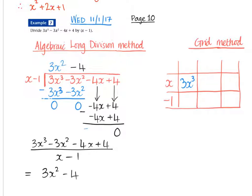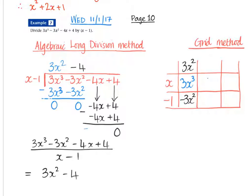Looking at the grid method like we did before - this is where it breaks down a little bit because you've got 0s. So we say to ourselves, the first part that we've got is our x here and the 3x cubed. So what do I multiply x by to get 3x squared, or divide 3x cubed by x? That would give us 3x squared. Then multiplying by minus 1 gives me minus 3x squared. Now what I actually want is minus 3x squared, so I don't have to add anything onto it. So that part there is going to be a 0. So 0 times minus 1 is also going to be 0.